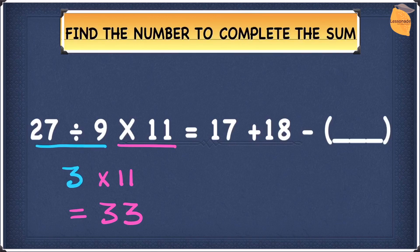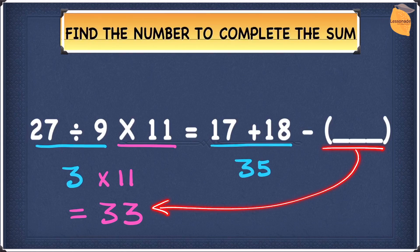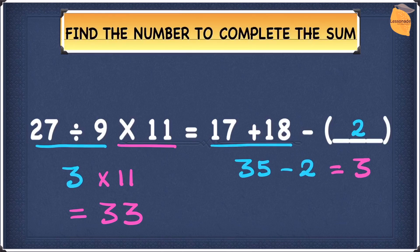Now let's work out the sum on the right hand side. 17 plus 18 gives you 35. So we need to do 35 minus the missing number to give us 33. Which number do we have to take away from 35 to give us 33? We have to take away 2 because 35 minus 2 gives you 33. I hope you understood everything so far.